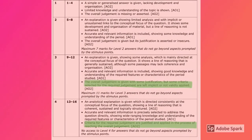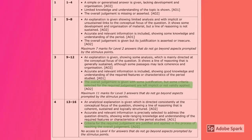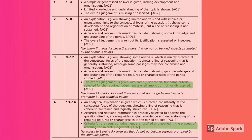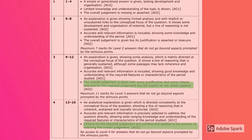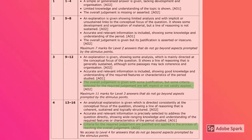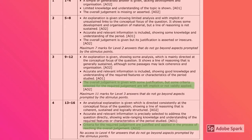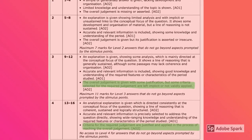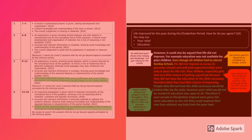So let's now apply this new knowledge to the question. Remember, it's 'life improved for poor people — how far do you agree?' We already have our argument that life did improve. We're now going to present our counter-argument, and at the end of this paragraph we're going to weigh up and prioritise what we believe is the most accurate representation — did life improve, or did life actually get worse?